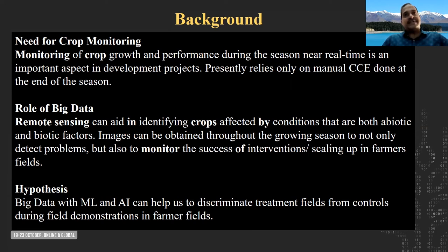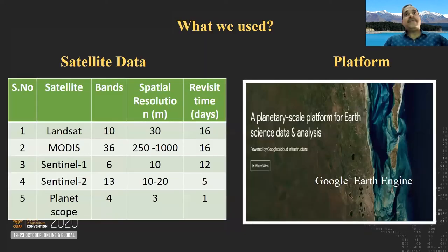This experiment was undertaken in the KHARIF season 2020, starting in June 2020. The hypothesis was whether big data along with machine learning and AI can discriminate between the treatments — the varieties that were introduced — from the controls, which were the farmer practices in these field demonstration programs. We mostly used Sentinel-1 having 30 meters of resolution, Sentinel-2 at 10 to 20 meter resolution, and Landsat. The open platform we used was Google Earth Engine.